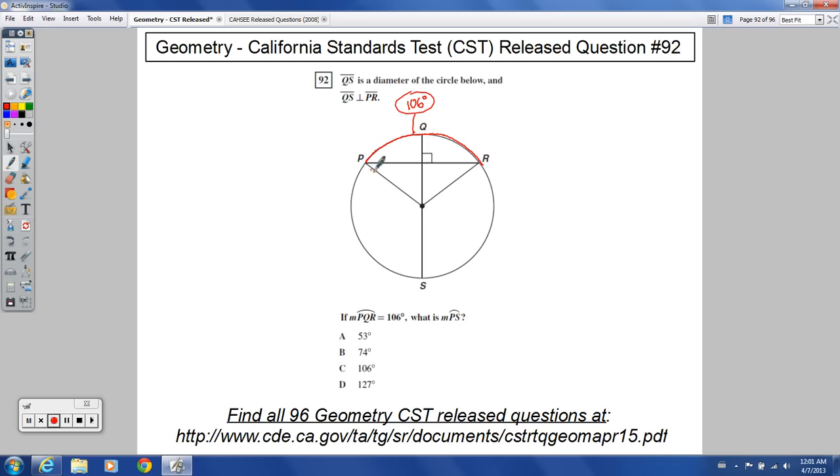If this is 106, all the way around would be 360. Since this is our diameter, it's going to cut this arc from P to S to R in half. I'm going to outline the arc in question in blue here, the measure of this arc right here.